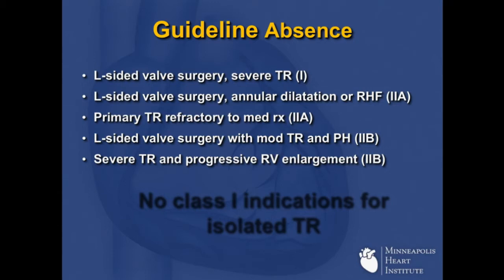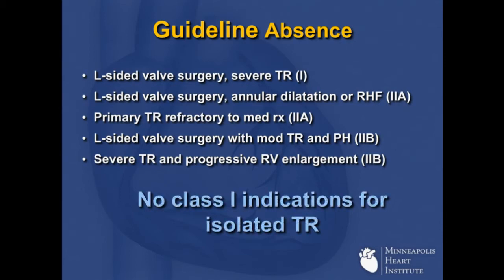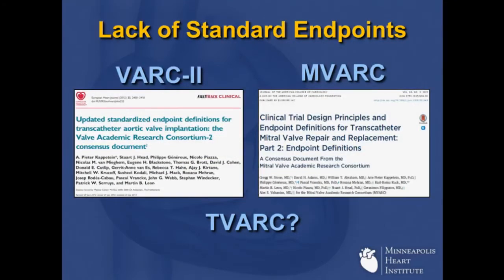Another major challenge is knowing what to do — indications. This will be one of the biggest challenges going forward for the transcatheter field. Even for surgery, look at the guidelines: there's a complete absence. Sure, if you're in there for the left side, treat the right side — that's obvious. But for the right side alone there are no class 1 indications. The reason is we simply don't know when, how, or how much. That's going to be a big challenge as we talk to agencies like the FDA.